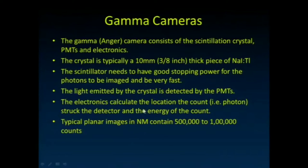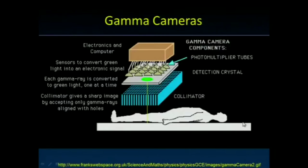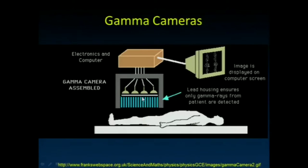The light emitted is detected by the PMTs, and the electronics calculate the event location. A typical nuclear medicine image contains about 500,000 to a million counts. On the persistence scope, it shows the individual events that have occurred over the last five-second interval or so.